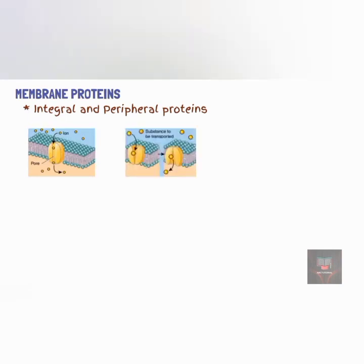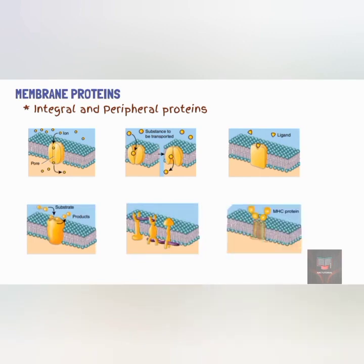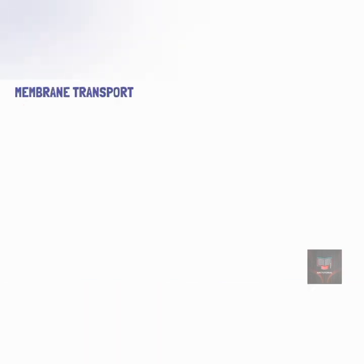Membrane proteins can act as ion channels, carrier proteins called transporters, receptors, enzymes, or linkers that anchor filaments inside and outside the plasma membrane. They can also act as cell identity markers, which distinguish one cell from another. Transport of materials across the plasma membrane is essential to the life of a cell.